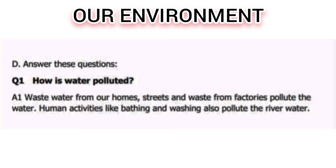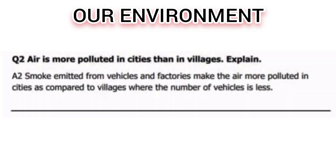First question: How is water polluted? Answer: Waste water from our homes, streets, and waste from factories pollute the water. Human activities like bathing and washing also pollute the river water.